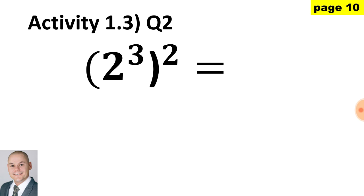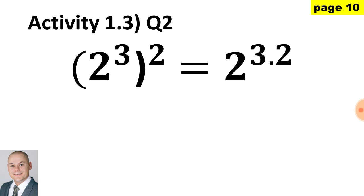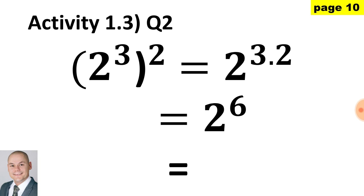Question 2: we have a power of 2 to the 3 raised to the exponent of 2. Therefore, we would multiply 3 and 2. Simplified, 2 to the exponent of 6 would give us an answer of 64.